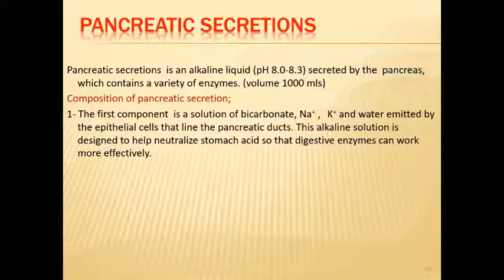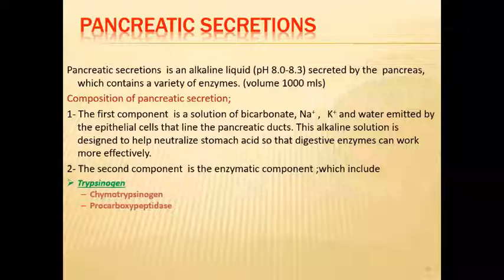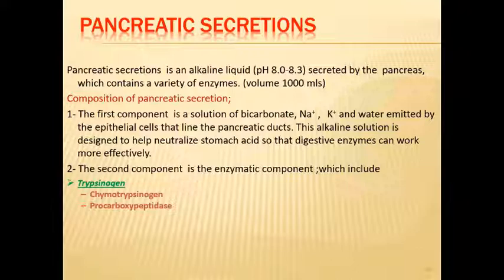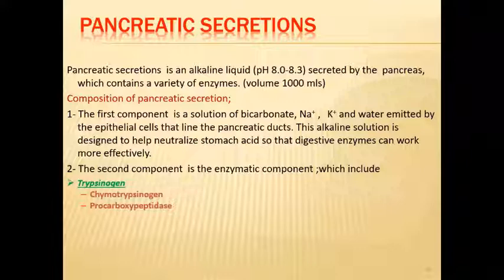Without neutralization, there would be little digestion taking place in the duodenum. The second component is the enzymatic component. The first and most important enzyme is trypsinogen, highlighted because it is the major enzyme involved in activating other enzymes. Trypsinogen is converted into active trypsin by enterokinase, an enzyme produced by the epithelium cells of the duodenum, at the brush border of the microvilli.